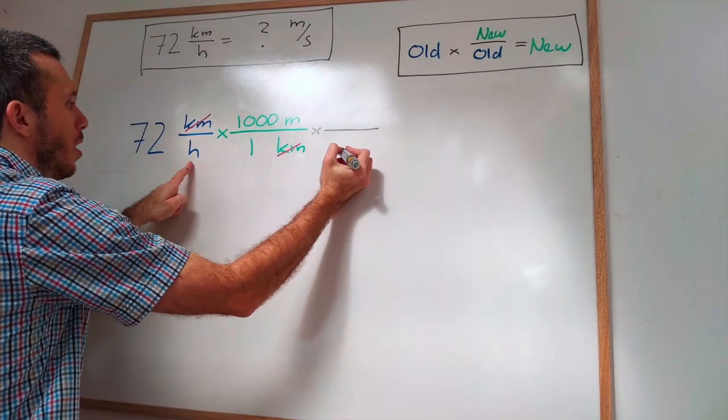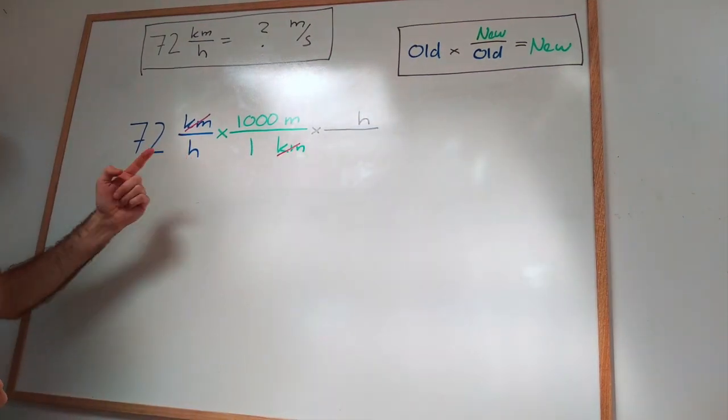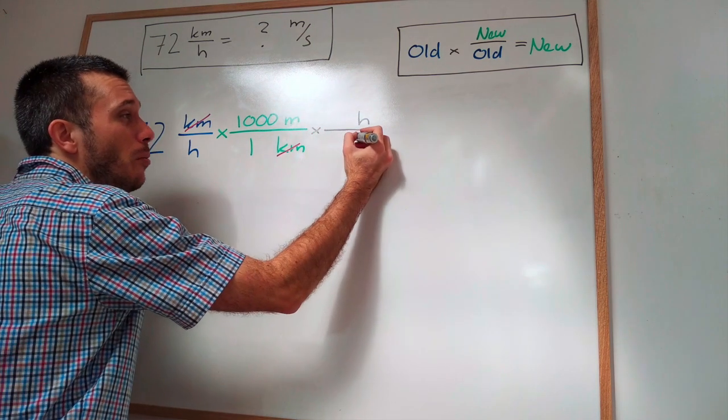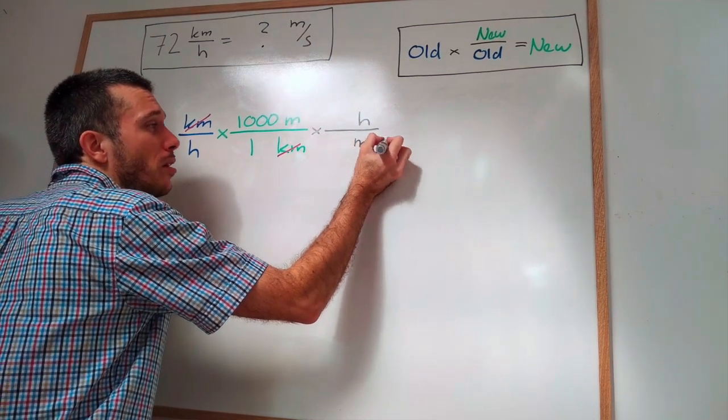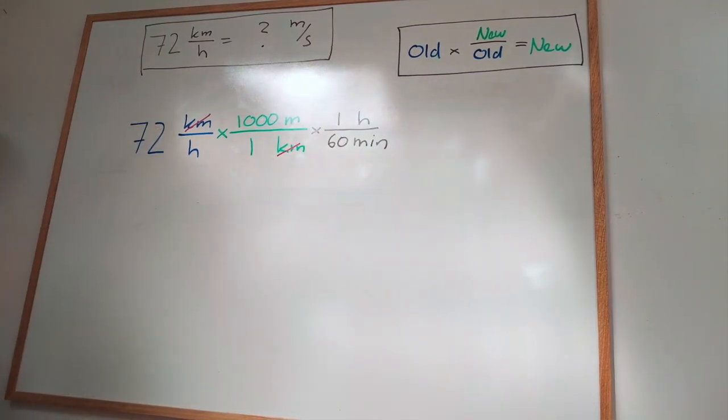So this time I'm going to write at the top hour and what do we want to convert to seconds? Well I have a bit of a blank out right now, I don't know how many seconds are there in an hour but I know how many minutes there are in an hour. I know there are exactly 60 minutes in one hour.